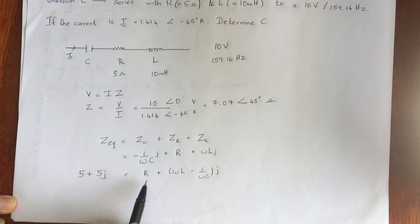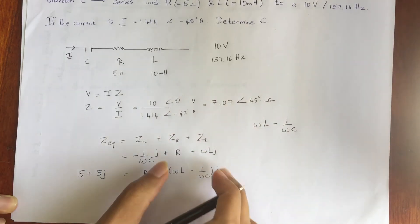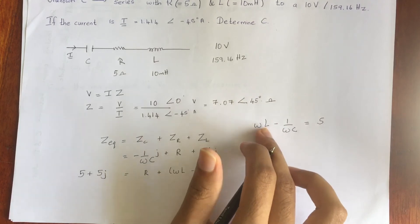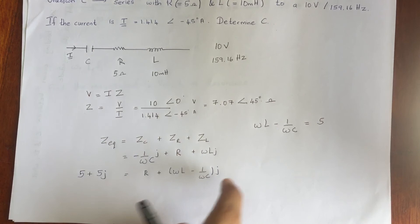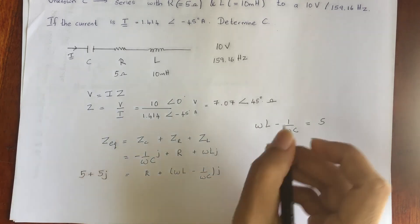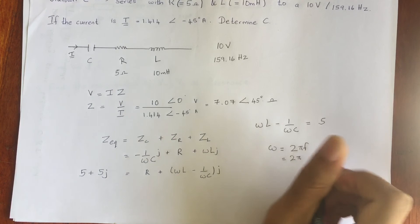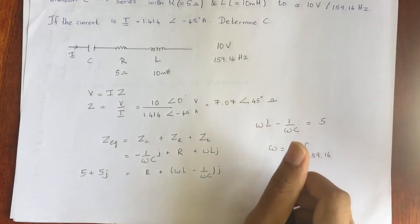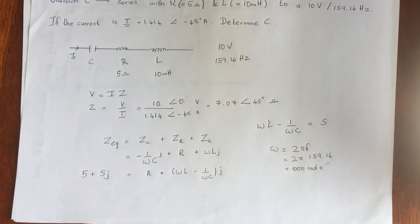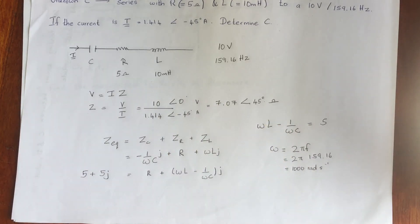So the real part is 5, which matches our known resistance R = 5 ohms. The imaginary part gives us: omega·L − 1/(omega·C) = 5. The inductance L is 10 micro henry, and we need omega. Using omega = 2πf with frequency 159.16 hertz, we get omega = 1000 radians per second. Substituting this into the equation allows us to solve for the capacitance C.